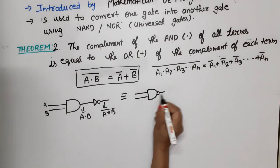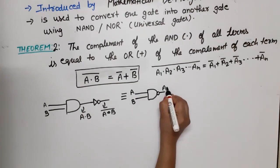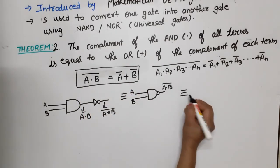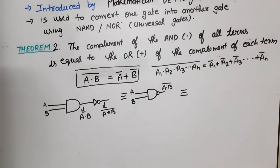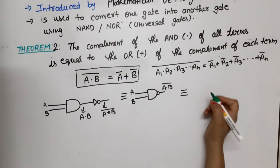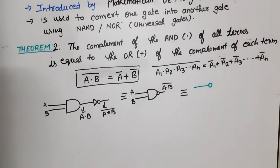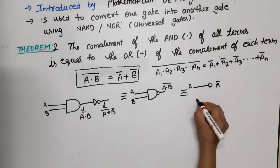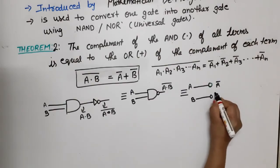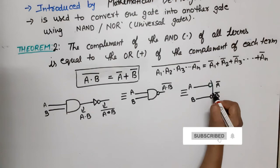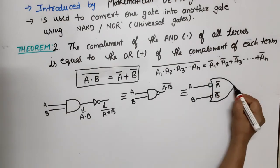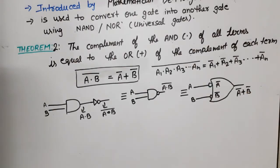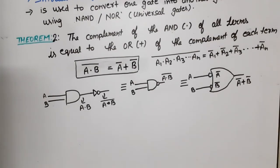This can be replaced by the OR of the complement of each term. We take the complement of A to get A bar, and the complement of B to get B bar, then apply these to an OR gate to get A bar plus B bar. This is the equivalent circuit representing the right-hand side of Theorem 2.